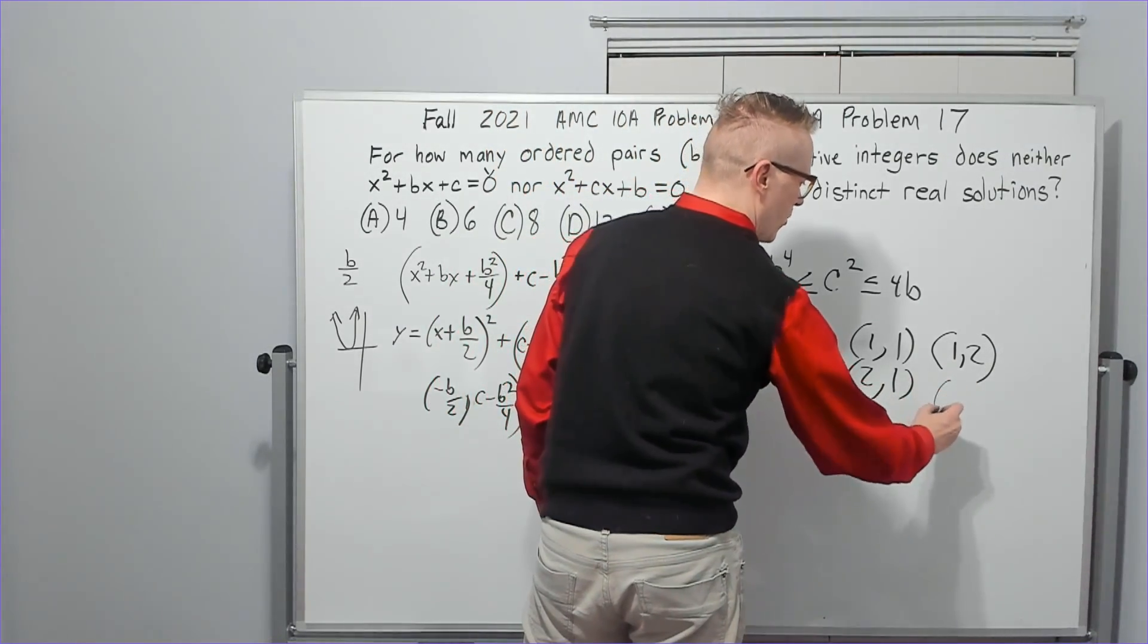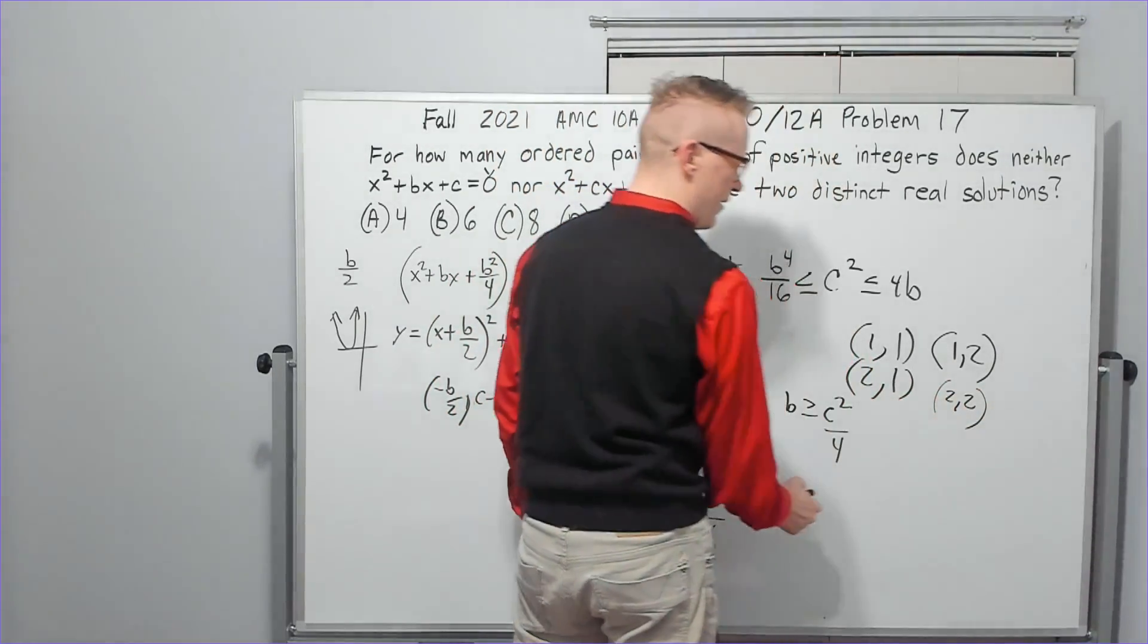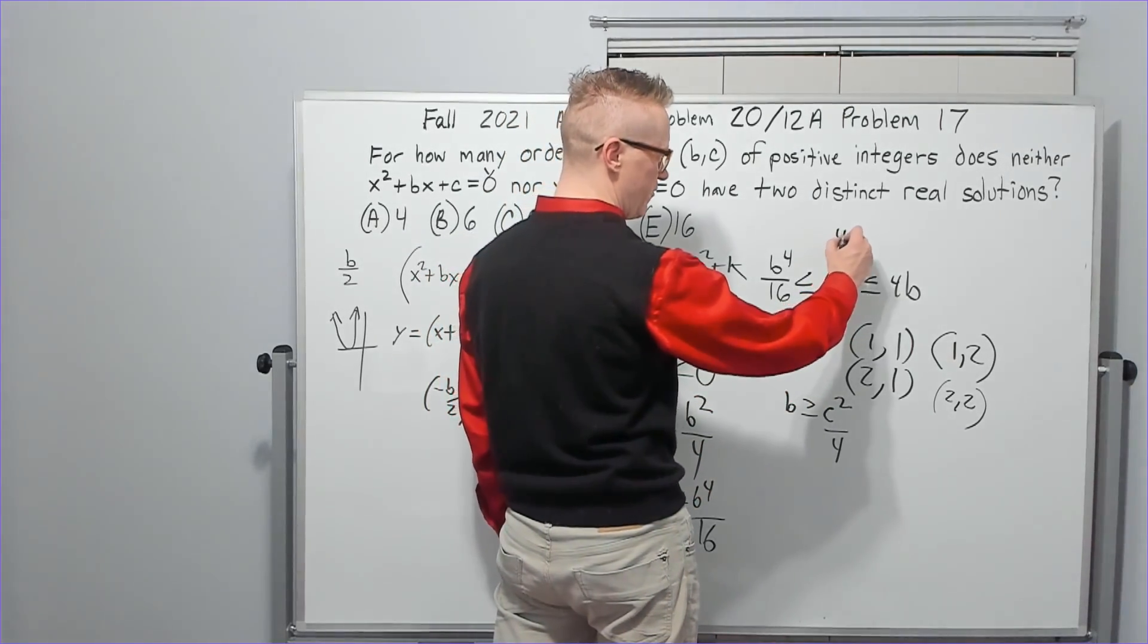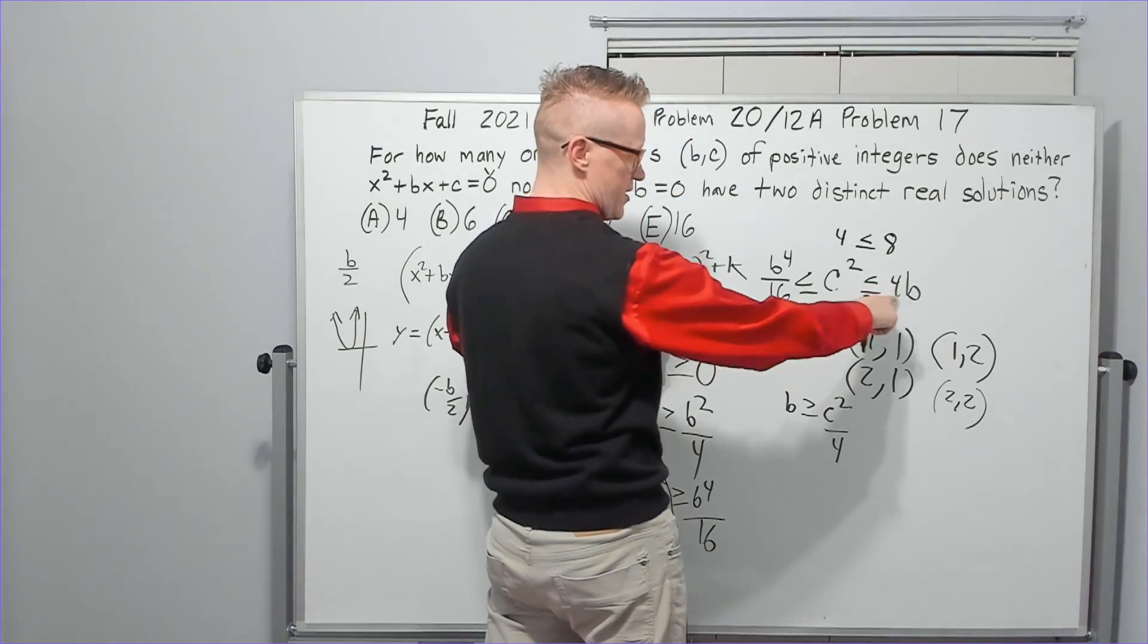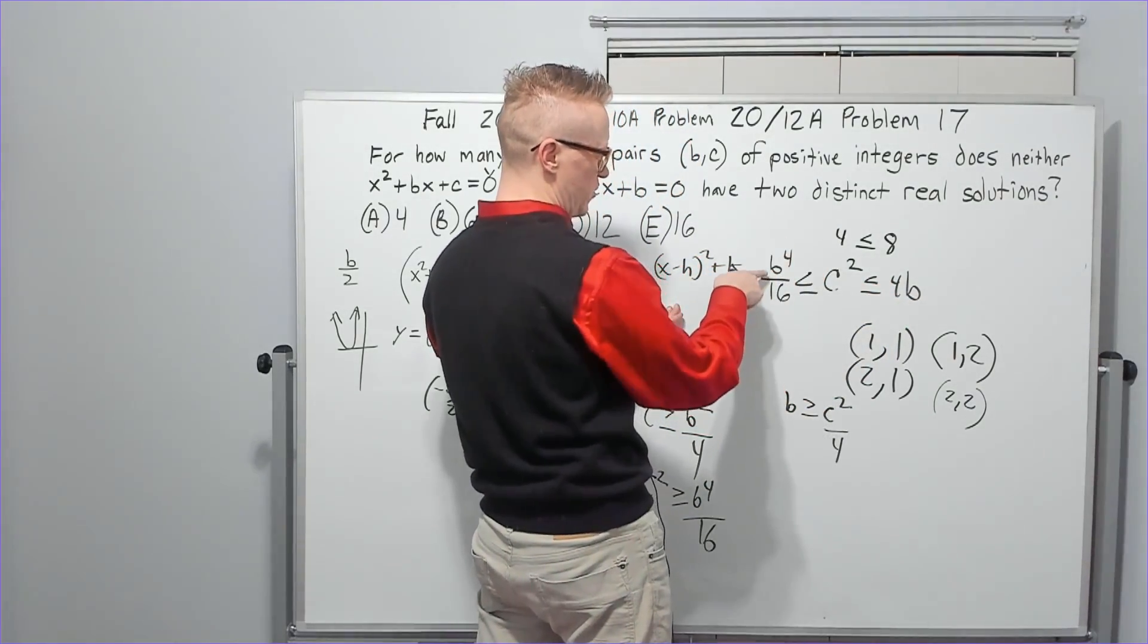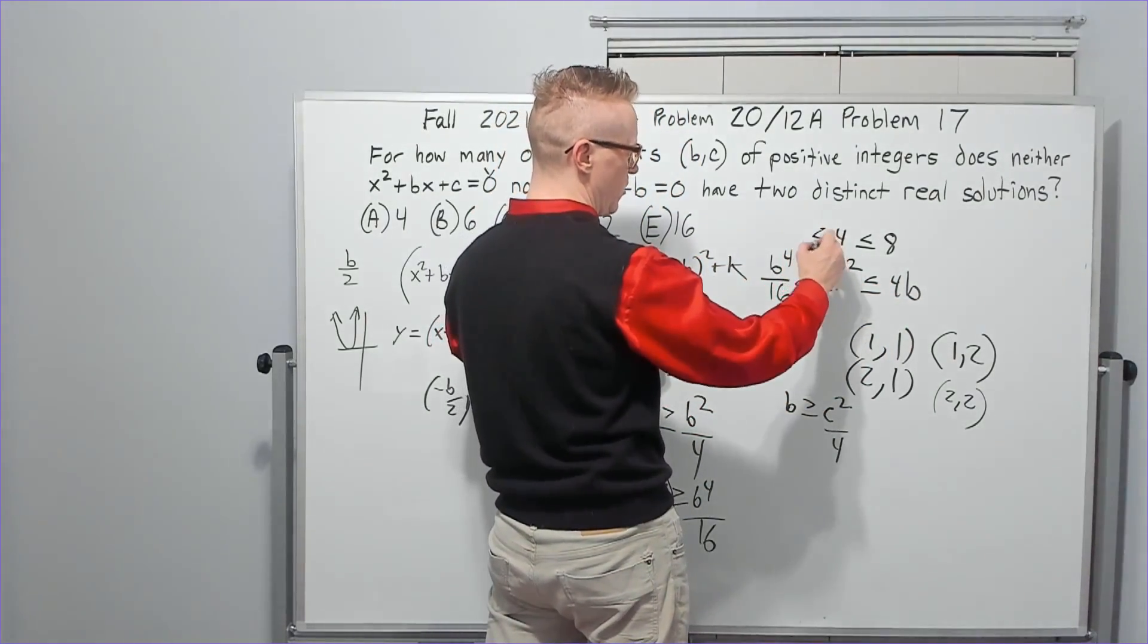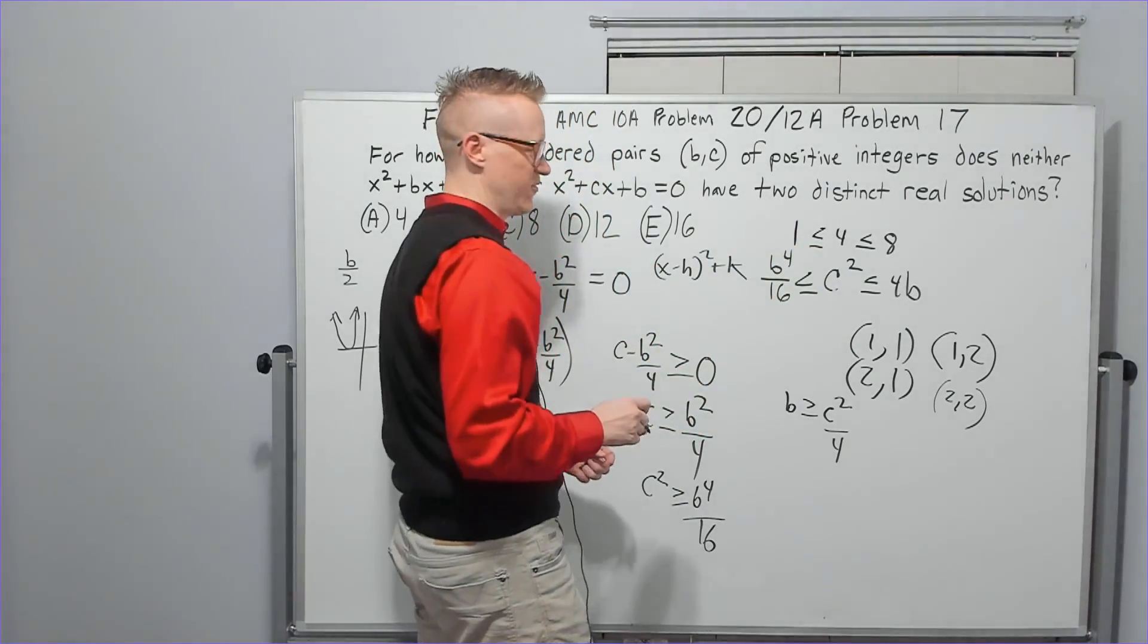Okay, so what's next? What about (2,2) then? If c takes on the value of 2, this will be 4 less than or equal to 8, 4 times 2. And then this will be 16 over 16, which is 1. That works just fine.